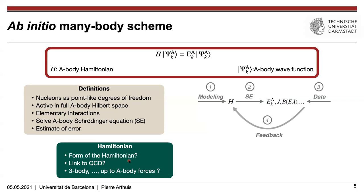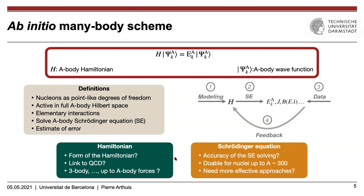Such a scheme comes with open questions: what is the exact form of the Hamiltonian and its link to QCD? Is chiral effective field theory the right approach? Where should one stop in the hierarchy of many-body forces — ideally A-body but that seems unreasonable. For the many-body method, is it really feasible to treat fully active nucleons up to A equals 300, or will we hit a wall and need more effective approaches for very heavy or deformed nuclei? These are the open questions the field is confronted with.